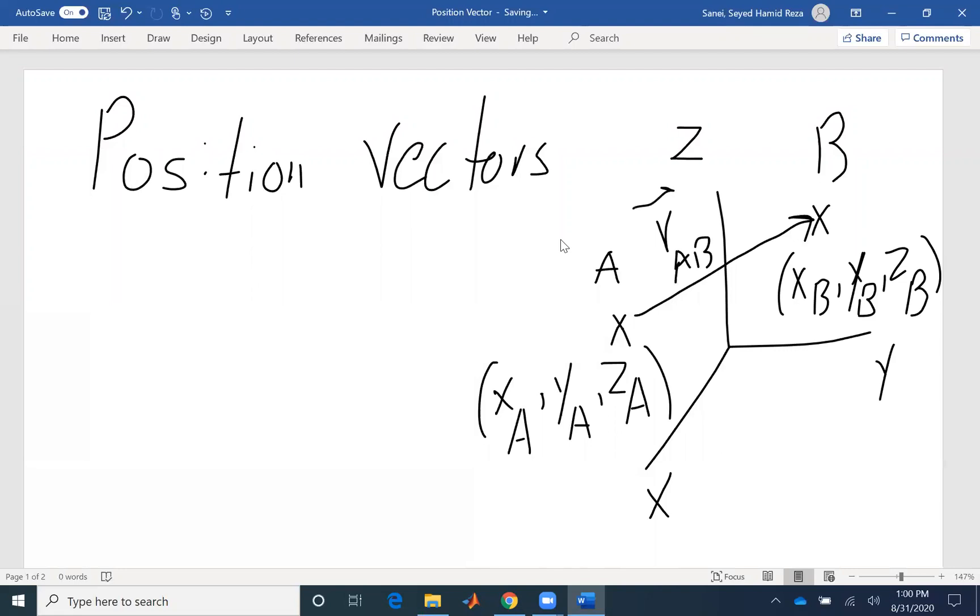So pay attention, the order of indices is important here. RAB is not the same as RBA. RAB means we are starting at A and then we are going to B.